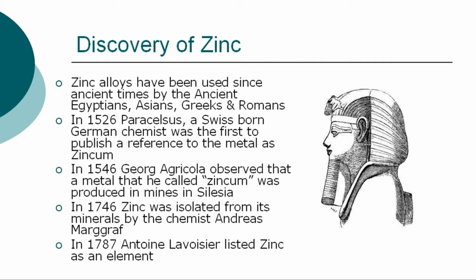In 1526, Paracelsus, a Swiss-born German chemist, was the first to publish a reference to the metal as zincum. In 1546, zinc was recognized in Europe as a separate metal when the German scientist Georg Agricola observed that a metal he called zincum was produced in mines in Silesia, a region which is now part of Germany and Poland. In 1746, zinc was isolated from its minerals by the chemist Andreas Margraf by heating calamine and carbon. Antoine Lavoisier listed zinc as an element in 1787.